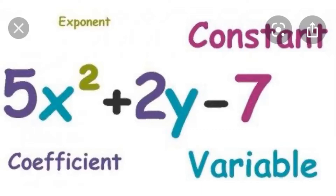There are two variables: x and y. The value of x can be changed, and the value of y can also be changed. The coefficient of y is 2, and the coefficient of x² is 5. Since 7 is a constant, it does not have any coefficient. The power of x here is 2, which is also known as the exponent. So it is a polynomial having two variables, three terms of which one is a constant, and the power of x² is 2.